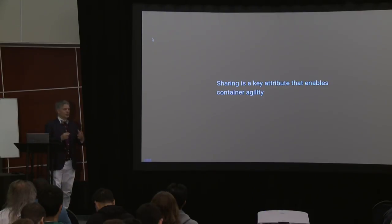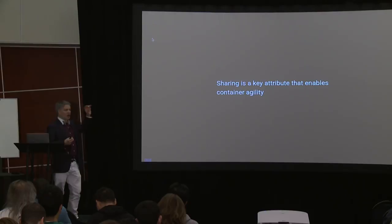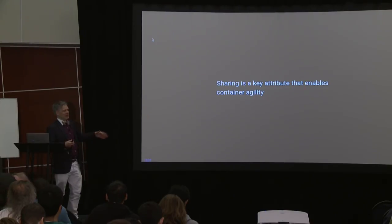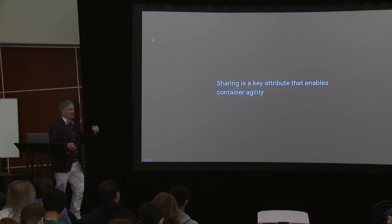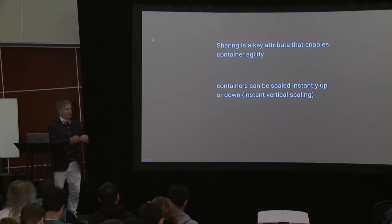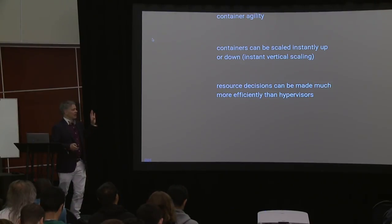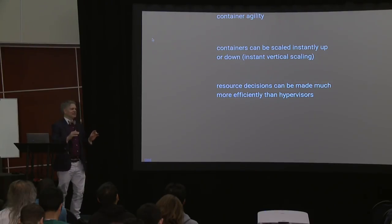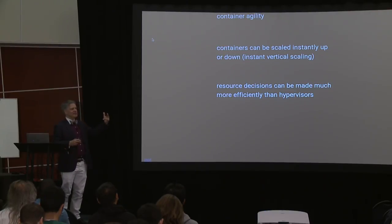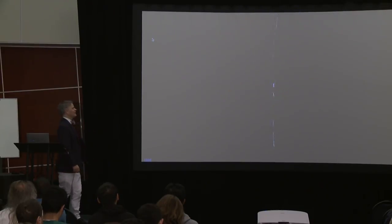The key point is that resource sharing — having a single kernel — is what gives you the agility of containers. It's what makes containers so lean, not necessarily in terms of the actual image, because most Docker images are often hundreds of megabytes. But it gives you resource sharing inside the kernel, great efficiency of memory management, and instant up or down scaling. The single kernel for containers makes resource decisions much more efficiently than hypervisors, because in hypervisors resource decisions have to be made across a hardware interface even though they're actually operating system decisions, so the guest kernel ends up fighting with the host kernel for resources.